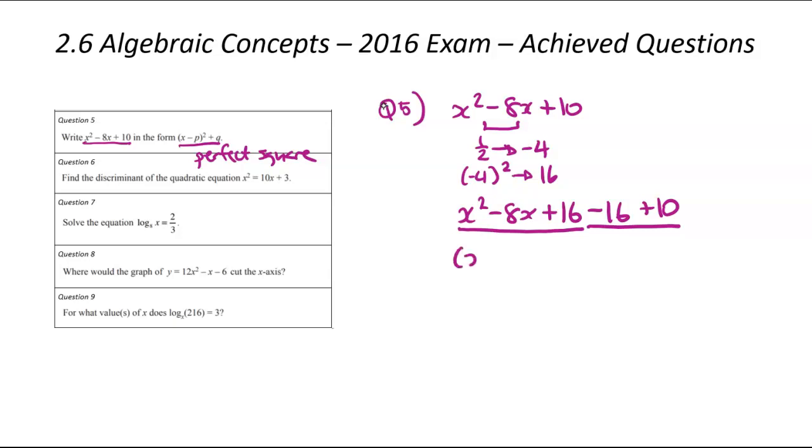So that means our brackets, x minus 4, x minus 4. And this lot here comes to minus 6. And because we've got the same bracket twice, we're going to make it a square. That here is going to be x minus 4 squared. And that's going to be minus 6 after that.